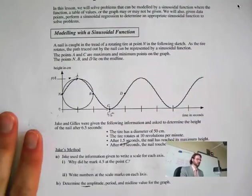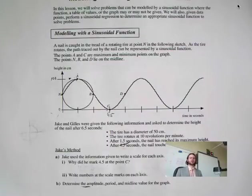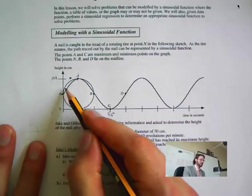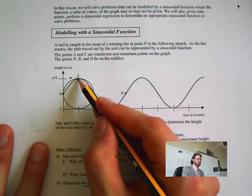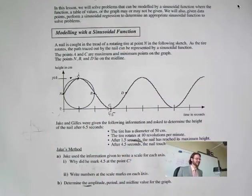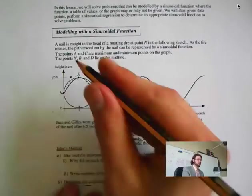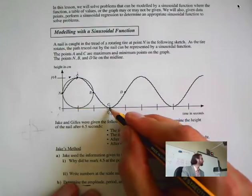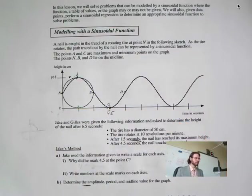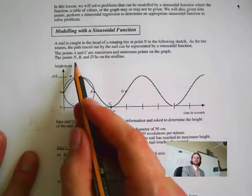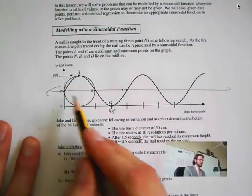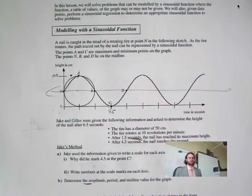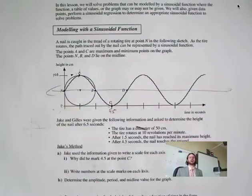Here's my first example. A nail is caught in the tread of a rotating tire at point N. It goes all the way up and down, up and down. So there's the top of the tire, bottom of the tire. The points A and C are the max and min. This is the top of the tire, bottom of the tire when it hits the ground. The points N, B, and D lie on the midline. The midline goes straight across and that's the middle, where the axle of the tire is.